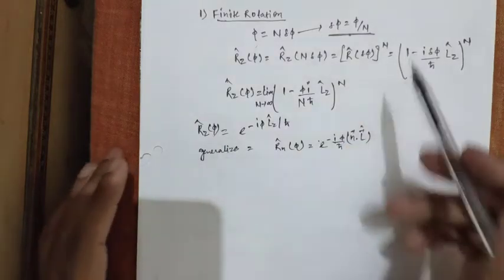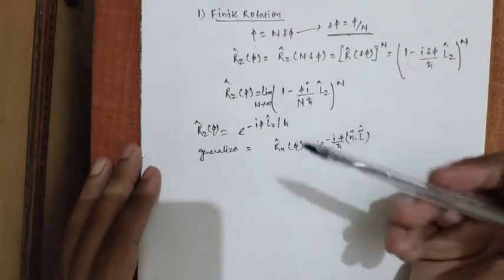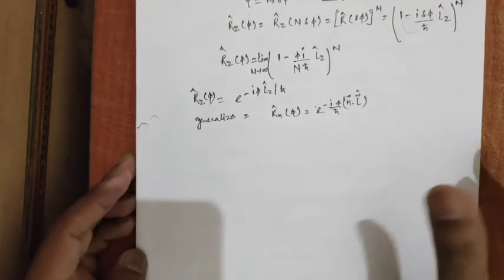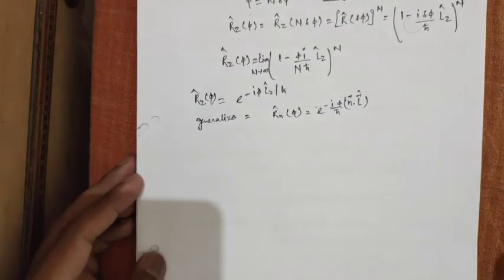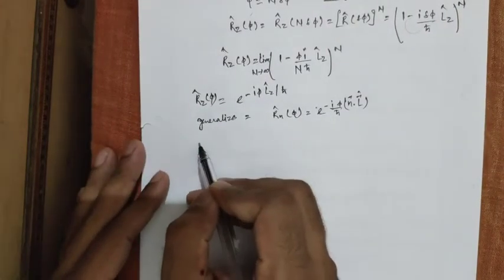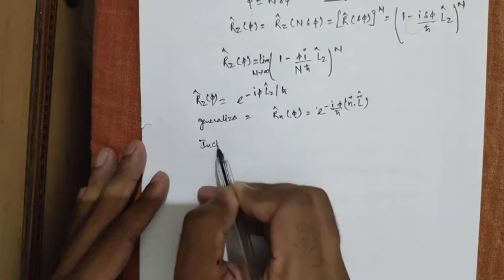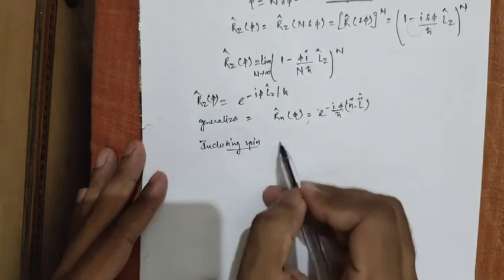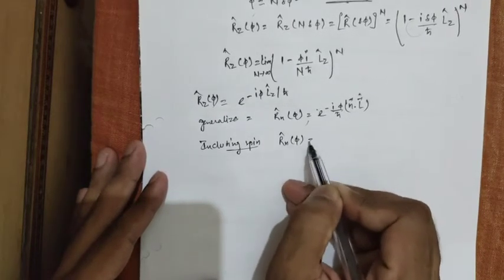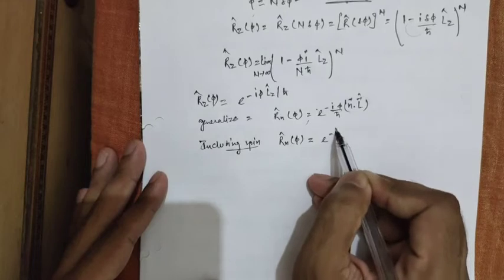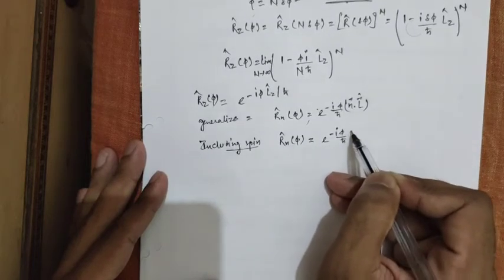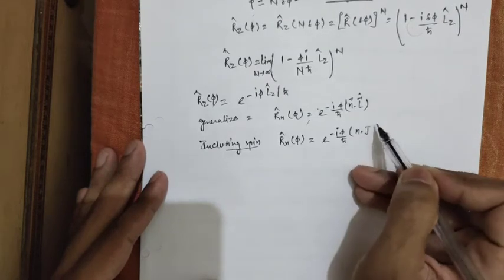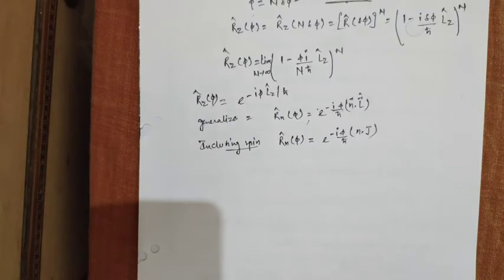Another thing is that, now we were evaluating this rotation operator for the spinless particle. For the particle which has spin, particle including spin, we can say that Rn phi is nothing but e to the power minus i phi by h bar n dot J, where J comprises both orbital angular momentum and spin angular momentum.